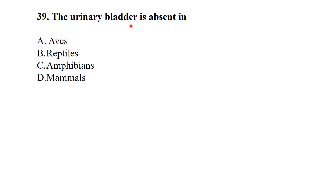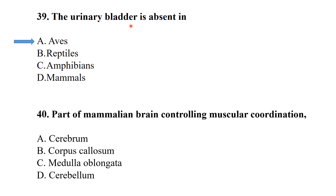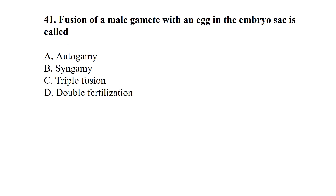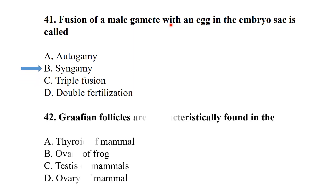The urinary bladder is absent in birds. The part of the brain controlling muscular coordination is the cerebellum. Fusion of a male gamete with an egg in the embryo sac is called syngamy. Graafian follicles are characteristically found in the ovary of mammals.